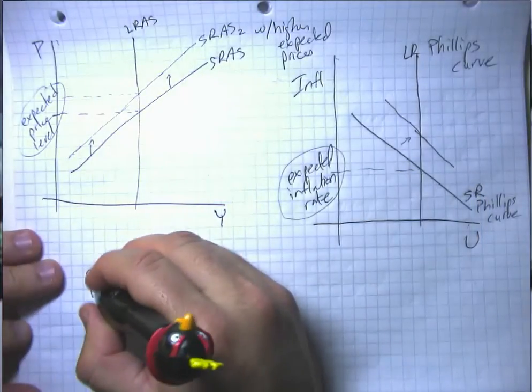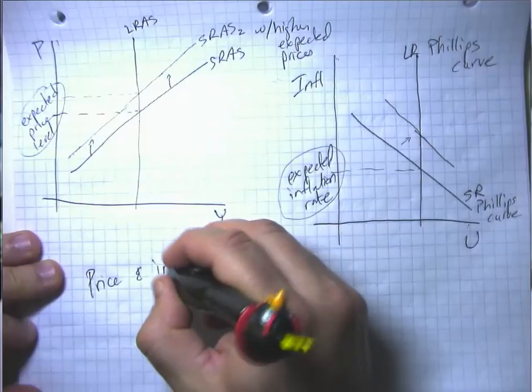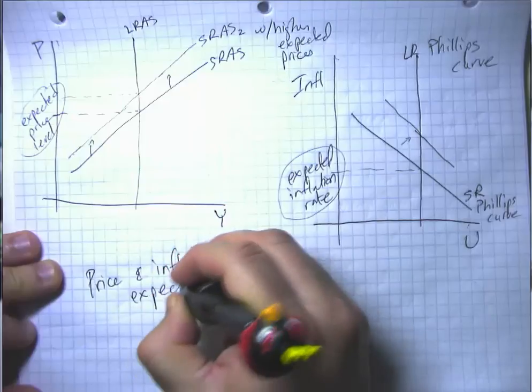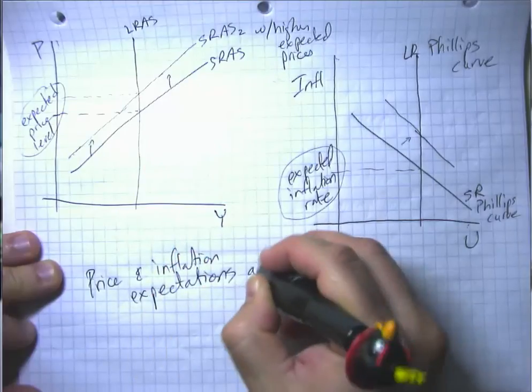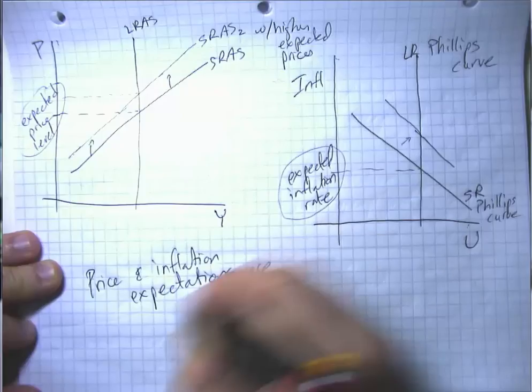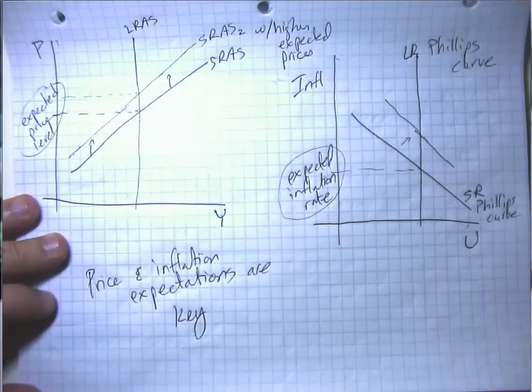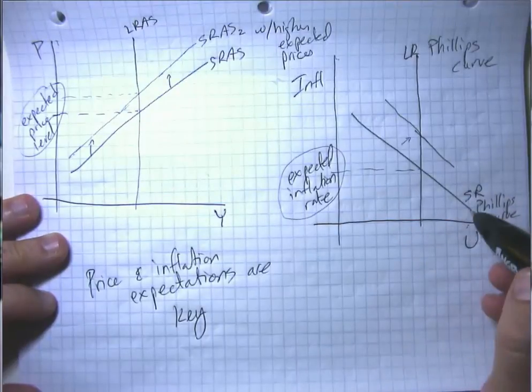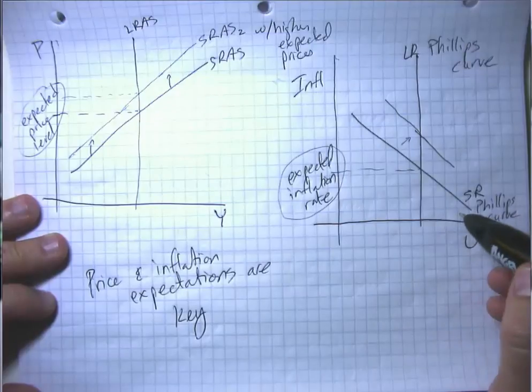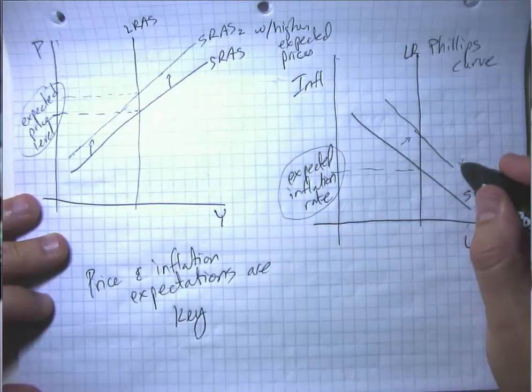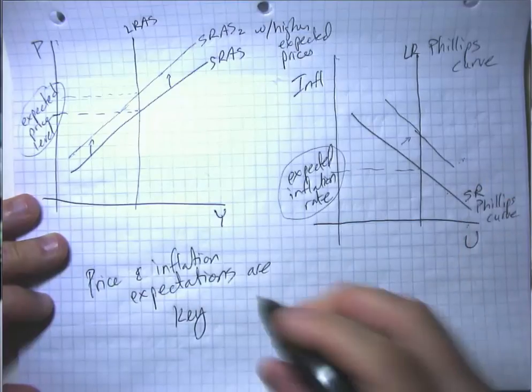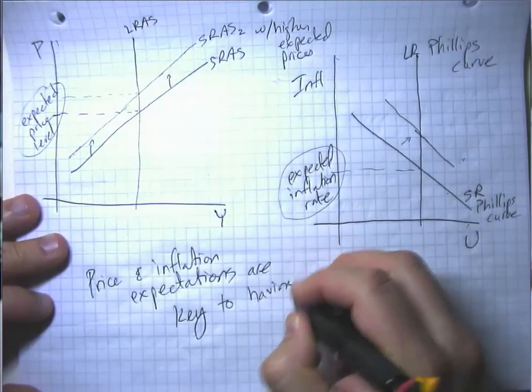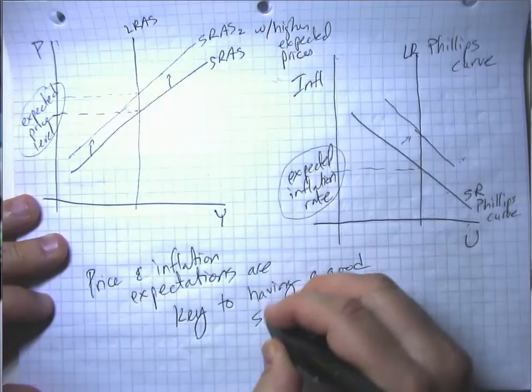So price and inflation expectations are key. And they're key to having a good Phillips curve. Generally notice a Phillips curve that is farther to the left gets us less inflation and less unemployment. So it gives us a better trade-off. A Phillips curve over here, this is a bad Phillips curve. This is a better Phillips curve. So price and inflation expectations are key to having a good Phillips curve, a good short-run Phillips curve.